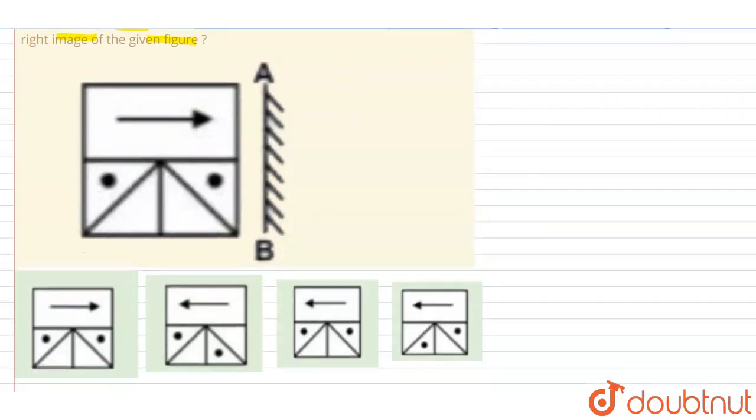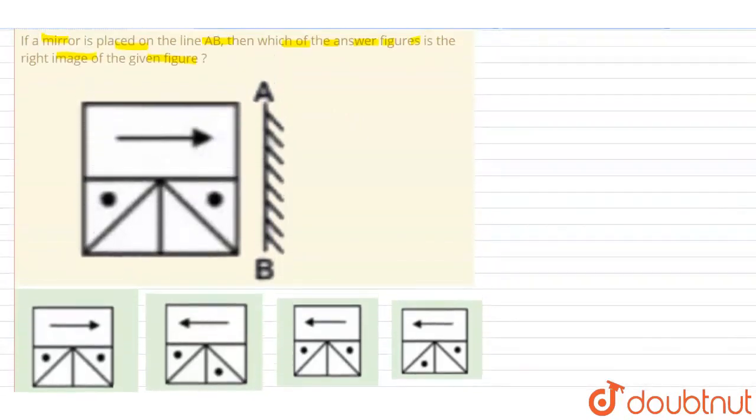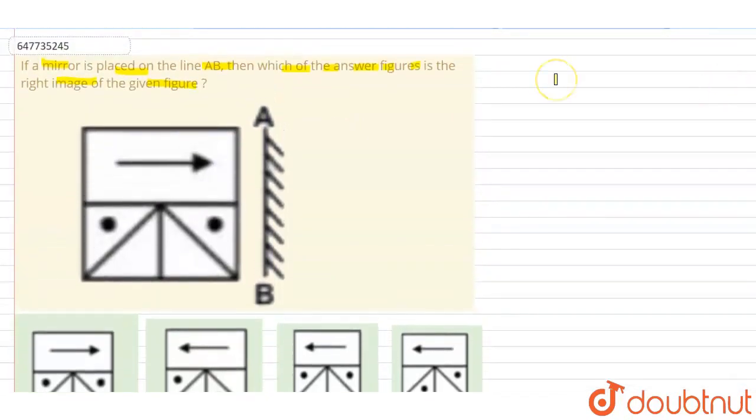Okay, so here we have options a, b, c, d given. Let's see. The mirror is placed on the right side of the screen. Look at this arrow pointing to the right side.